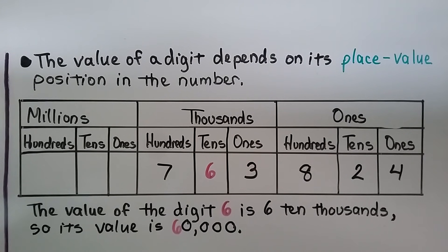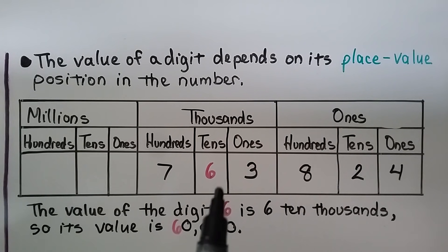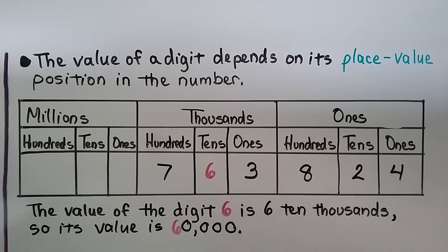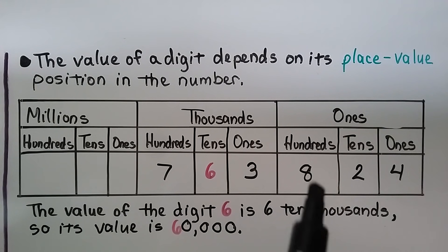The value of a digit depends on its place value position in the number. Here we have this big long number. Look at the six — the value of this digit six is in the ten thousands place value, so its value is 60,000. We have a six and then four zeros — that's 60,000.